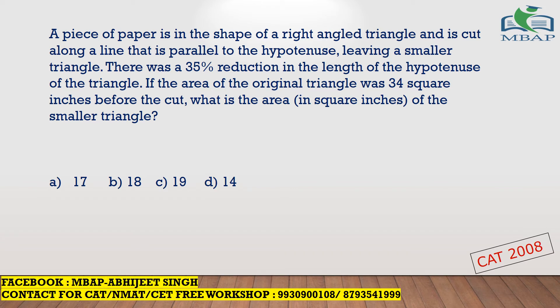The last question is CAT 2008 — the most difficult question many come across in geometry. A piece of paper is in the shape of a right-angle triangle and is cut along a line parallel to the hypotenuse, leaving a smaller triangle. There was a 35 percent reduction in the length of the hypotenuse. If the area of the original triangle was 34 square inches before the cut, what is the area of the smaller triangle?